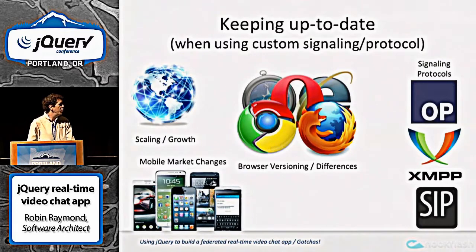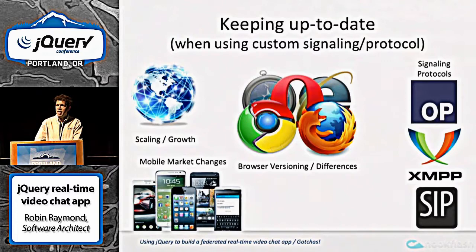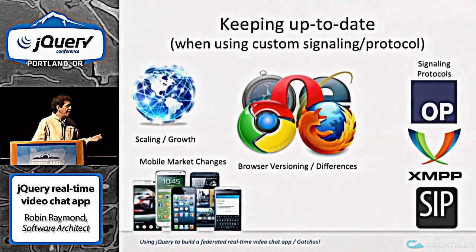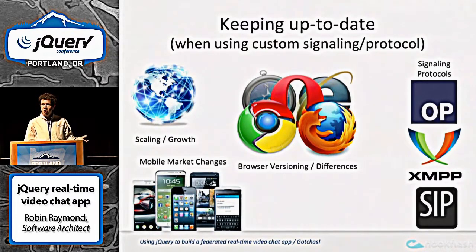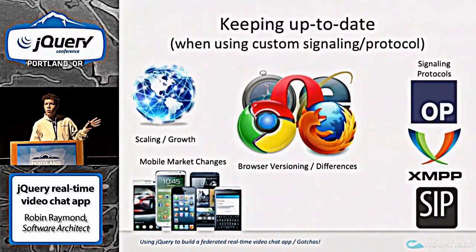If you build your own signaling and decide to go it alone, it's not as easy as it seems. There's a lot of innovation in the browsers — they're talking about adding features constantly — and keeping up with all of that is a real challenge. It's better to use someone who's actively investigating these problems and coming up with a decent API. You also have to worry about scaling — can it scale to thousands, tens of thousands, millions of users? And then you bring it onto mobile and the problem just explodes.